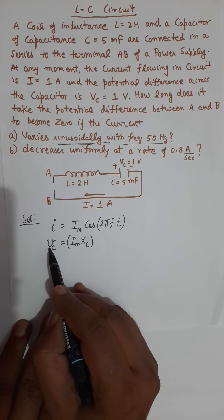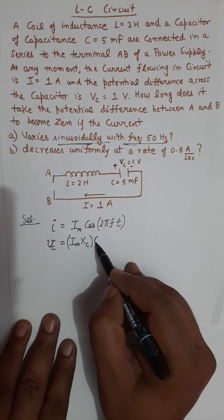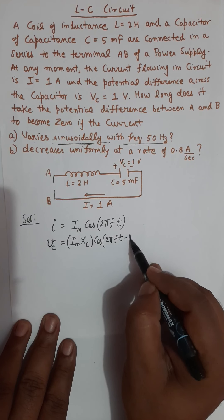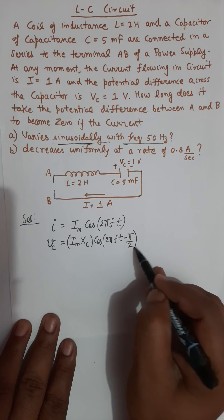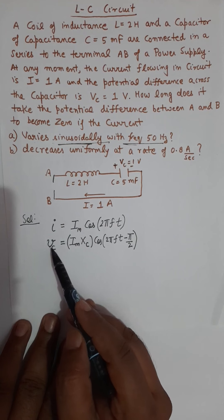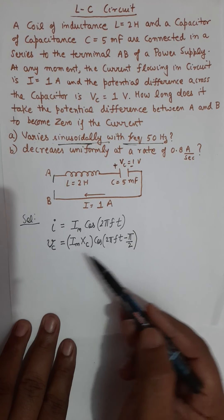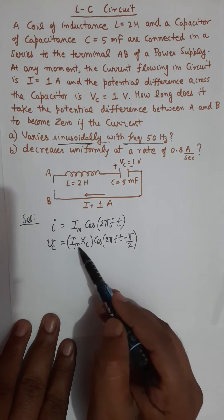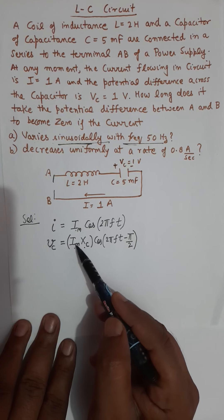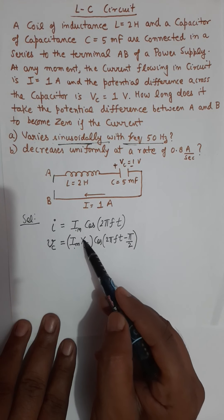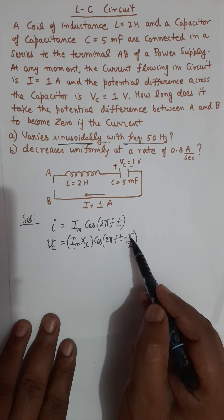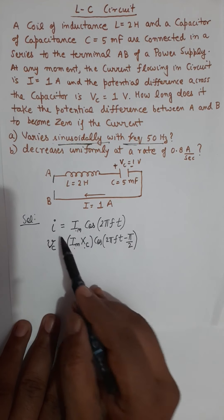The oscillatory equation for voltage across the capacitor will be the same equation with a phase difference of π/2, and the voltage across the capacitor lags behind the current. If the oscillatory equation for current is cosine, then the oscillatory equation for voltage will have two changes: the maximum value of voltage will be I_max times capacitive reactance, and the voltage will oscillate with π/2 phase difference with the current.